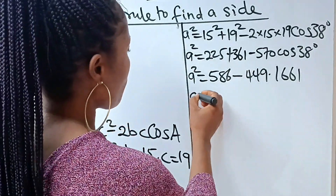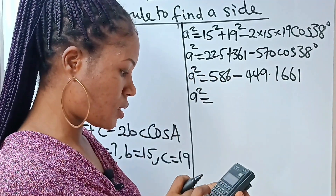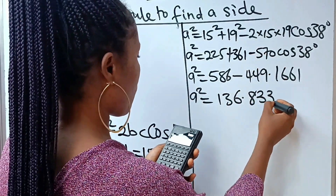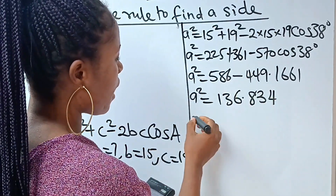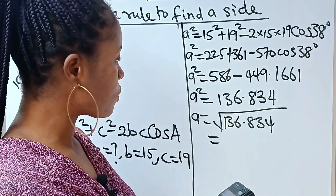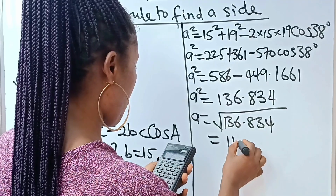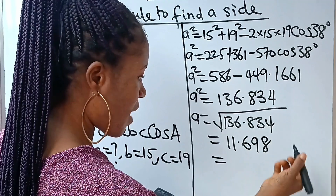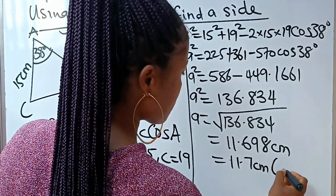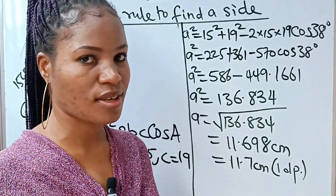So a² = 586 − 449.1661 ≈ 136.834. Taking the square root: a = √136.834 ≈ 11.698, which we round to 11.7 centimeters to one decimal place. That is our solution. Thank you so much for watching, and I hope to see you next time — bye!